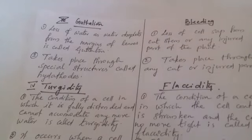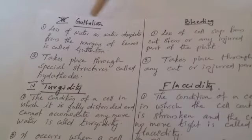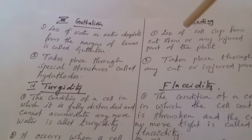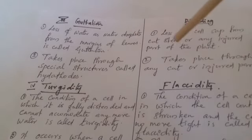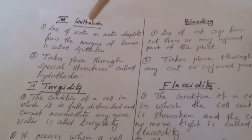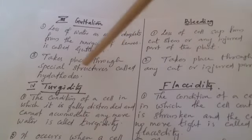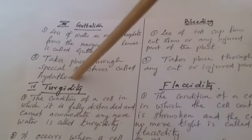Next: guttation and bleeding. Guttation — loss of water as water droplets from the margins of the leaves is called guttation. Bleeding — loss of sap from a cut stem or any injured part of the plant. Guttation takes place through special structures called hydathodes; bleeding takes place through any cut or injured parts of the plant.